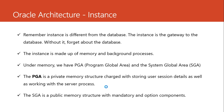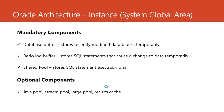Apart from the PGA, we have what we call the System Global Area, or the SGA. The SGA is a public memory structure and it has two components: the mandatory parts and the optional parts. It's really a big memory structure and without it we cannot use the database. We shall pay much attention to the mandatory components. In the mandatory, we have the database buffer, the redo log buffer, and the shared pool. Let's begin with the database buffer.